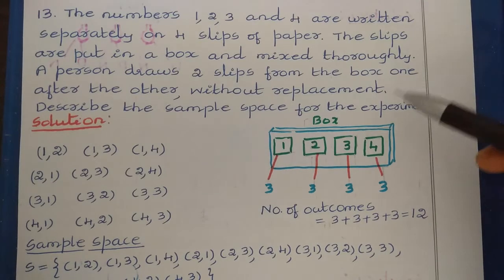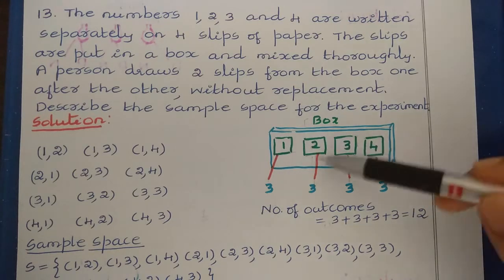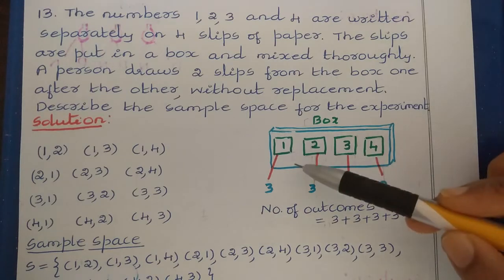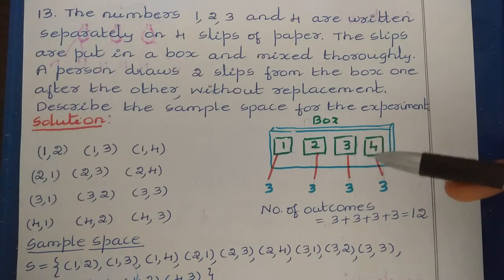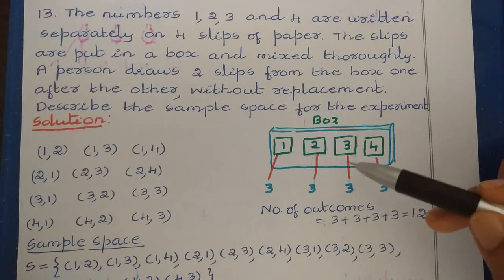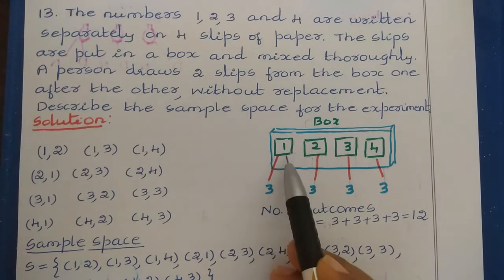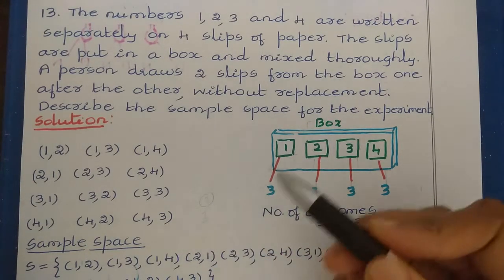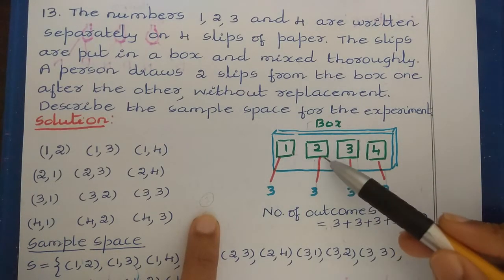In this problem, there is a box and inside that box are 4 slips of paper containing the numbers 1, 2, 3, and 4. A person wants to take 2 slips from the box one after the other without replacement. That means after taking 1 slip, the person cannot put that particular slip back inside the box again until both slips have been taken. Now, if the person takes slip 1 first, then in the second draw the person may take 2, 3, or 4.